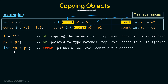Next, I'm defining a new simple pointer p of type int* and trying to copy p3 to p. p3 has both a top-level and a low-level constant. The top-level constant can be ignored, but there is still a low-level constant in p3 which cannot be ignored. So there is a mismatch: p3 points to constant integers, but p is a pointer that can only point to simple integers, not constant integers. p3 has a low-level constant but p does not, so this copying cannot be done.